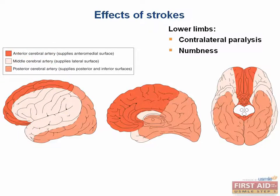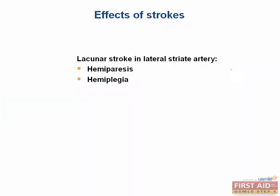The lateral striate is a smaller branch of the MCA. Importantly, it is a common location for lacunar strokes. Lacunar infarcts are infarcts that occur secondary to long-term hypertension. Because this vessel supplies the striatum and internal capsule, you can have severe hemiparesis and hemiplegia. It is noteworthy that lacunar strokes can occur in other deep brain structures as well, and where it occurs will determine the symptoms.